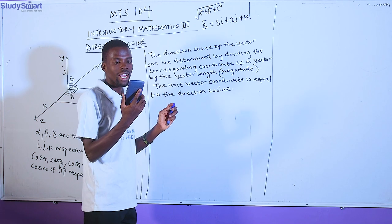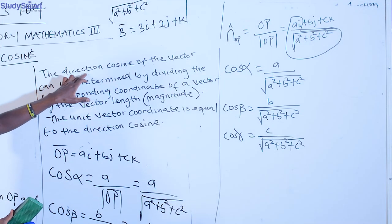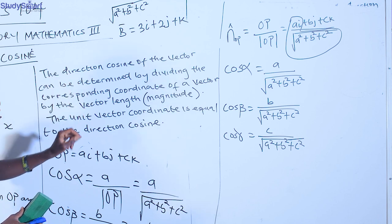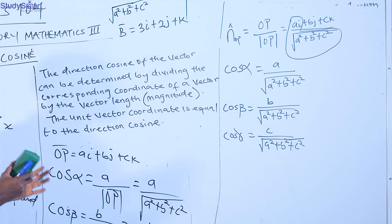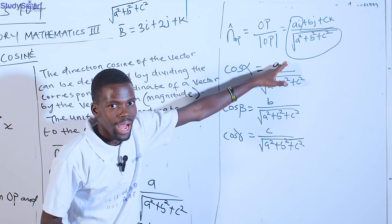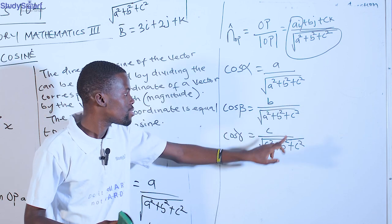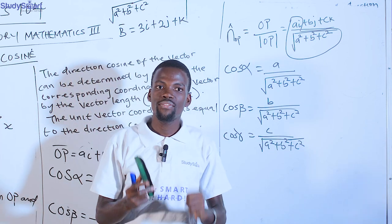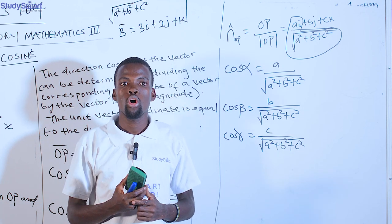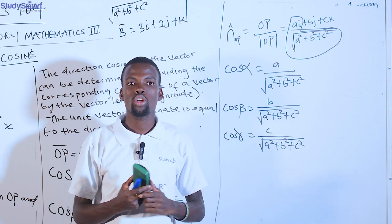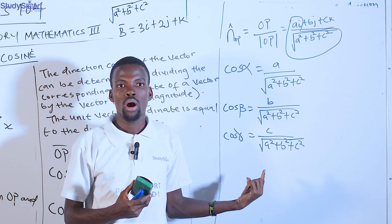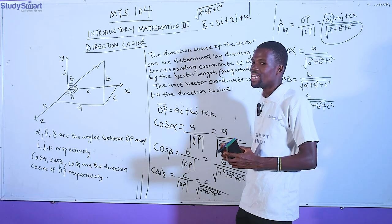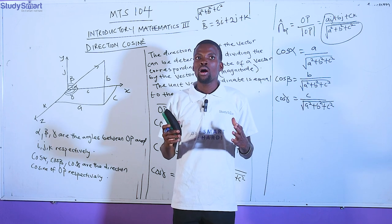The square root of 14 gives approximately 3.742. The direction cosine of the vector can be determined by dividing the corresponding coordinates of the vector by the vector length — dividing the corresponding coordinates: i for the x-axis, j for the y-axis, k for the z-axis. Dividing each by the magnitude gives the direction cosine. From the unit vector we can get the direction cosine.